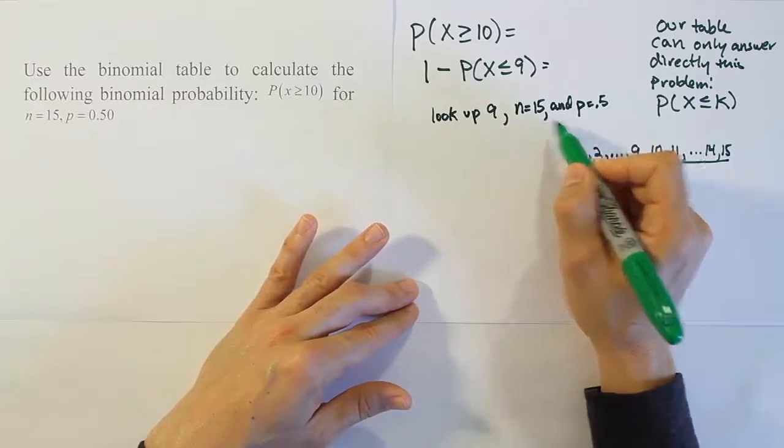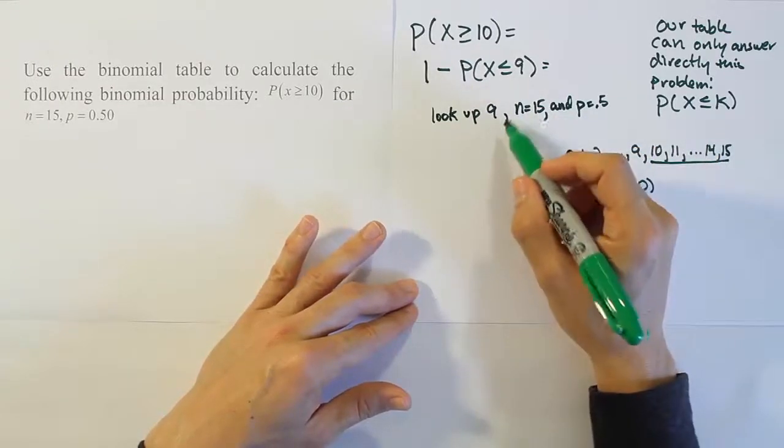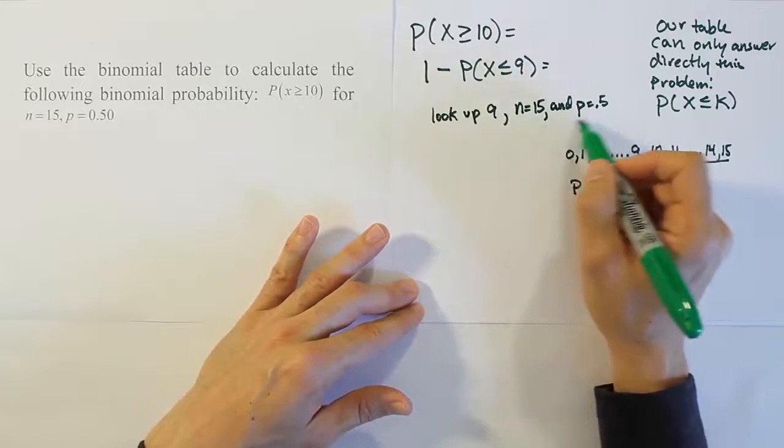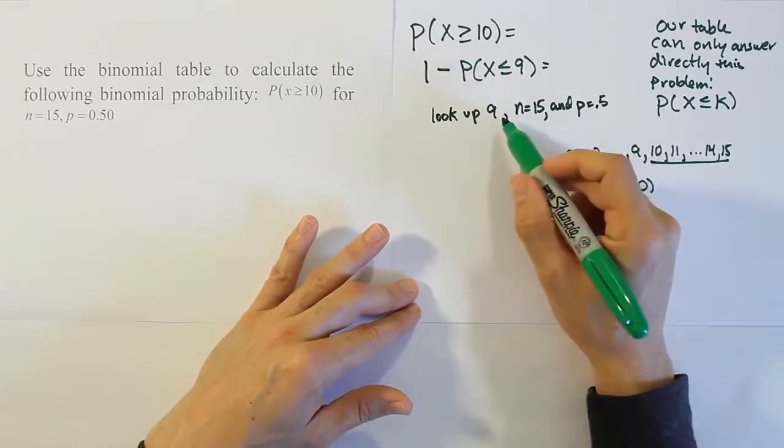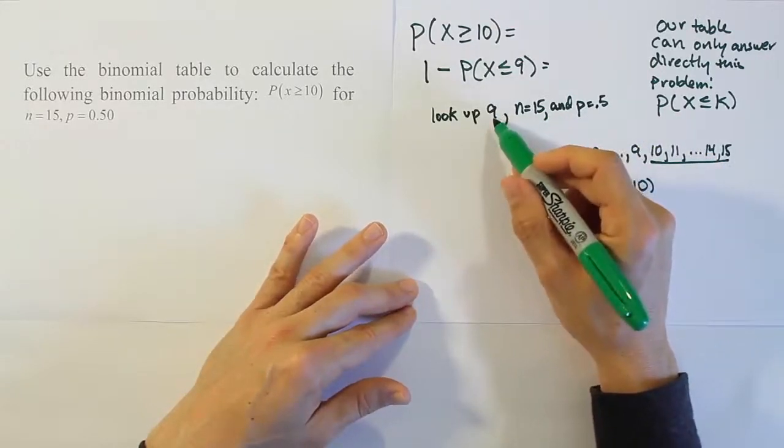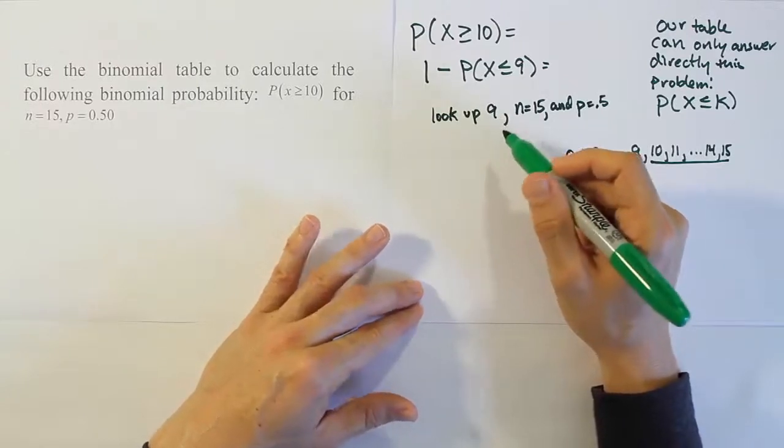All that matters is that this will be n, this will be p, and the third number is the number that you're looking up there. And so, you know, these two numbers at least are always named the same thing. The other number left over is the number we're talking about, whether they call it k or c or y or whatever.